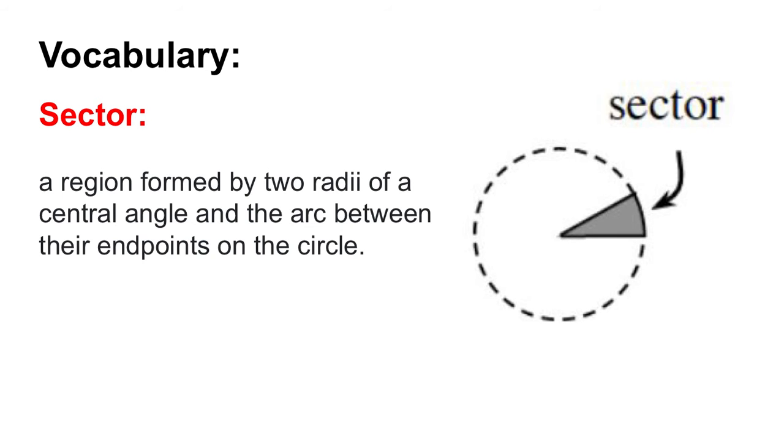So now let's talk about what a sector is. A sector is a region of a circle formed by two of the radii and then the central angle and the arc in between them. So it's the shaded area in here.